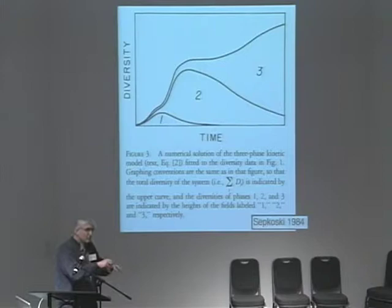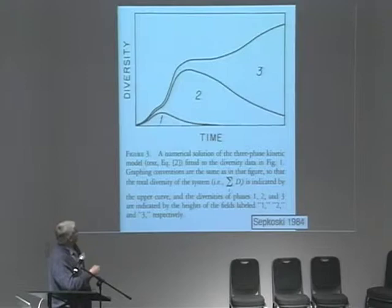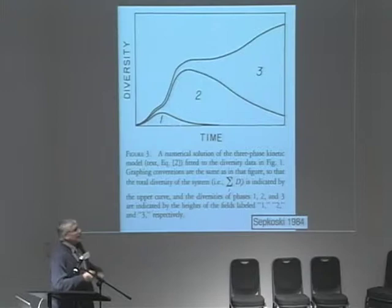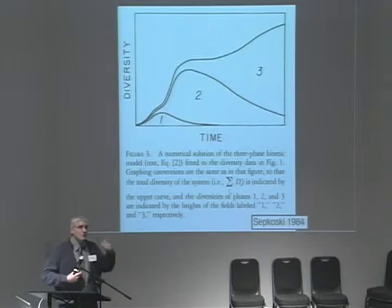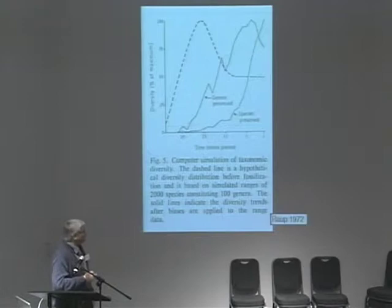Sapkowski imported island biogeography models across many scales in the hierarchy — from individuals within populations and communities up to families at the global level. He modeled the history of diversity as a three-phase coupled logistic model, where each phase has a carrying capacity and is essentially inhibited by the total diversity in the system. You can empirically scale the turnover rates and carrying capacities to get a reasonable fit to the family-level data. Sapkowski is putting forth the proposition that at a very large scale, the history of life is consistent with diversification being limited by some kind of diffuse biotic interaction.